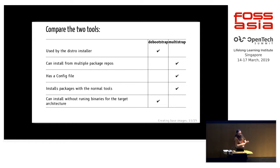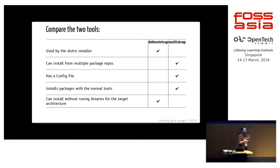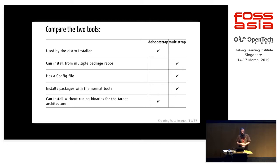Why would you choose one tool over the other? Debootstrap is the default install and you know it'll work because it's how a lot of people install their distribution. But sometimes the config file means it's harder to run from the command line, and it doesn't support multiple package repositories like Multistrap. Multistrap installs packages closer to the normal way, so certain post-install scripts run automatically, giving a cleaner setup. If you're cross-installing for a different architecture, you'd want to use Multistrap.